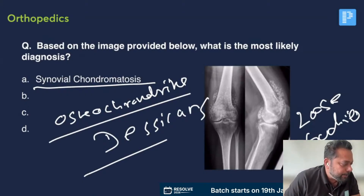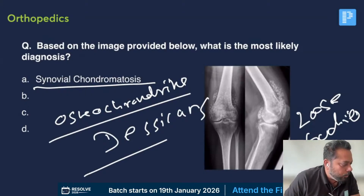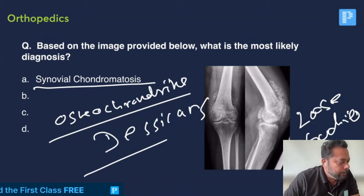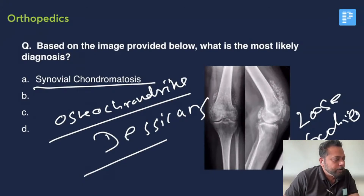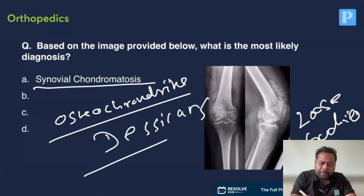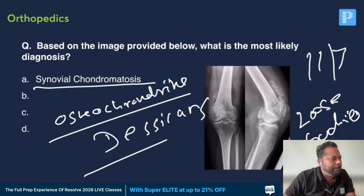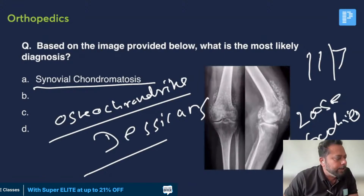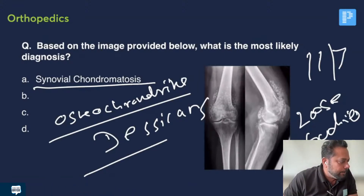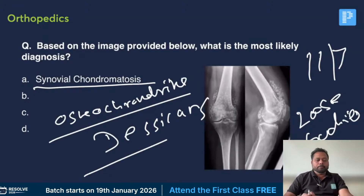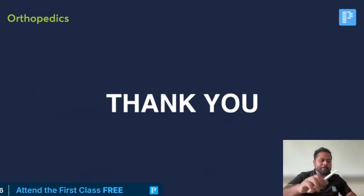Leo Das mentioned there was also a question on osteosarcoma — specifically about Codman's triangle. When an X-ray shows an elevated periosteum in a triangular shape, it should be osteogenic sarcoma. Mohammed Sheikh answered synovial chondromatosis correctly. That completes our orthopedic session. Most of the questions were repeated from our LRR and RR, and most of you already answered them correctly.